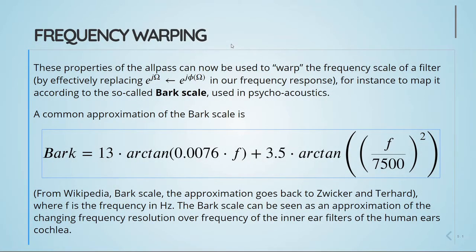These properties of the allpass can now be used to warp the frequency scale of a filter by effectively replacing e^(jΩ) with e^(j·φ(Ω)) in our frequency response.